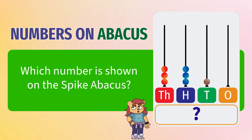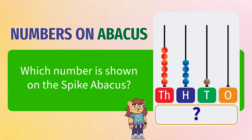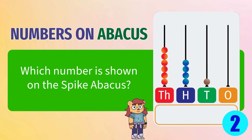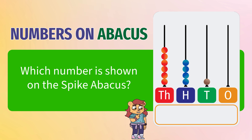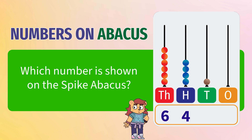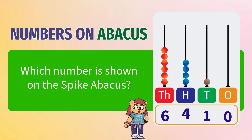What number is shown on the spike abacus? Six thousandths, four hundredths, one tens, zero ones. The number is 6410.